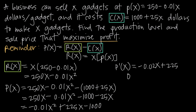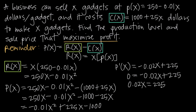The next step is to set the derivative equal to zero to find critical points. Setting negative 0.02x plus 225 = 0 and adding 0.02x to both sides gives 0.02x = 225. Dividing both sides by 0.02 gives x = 11,250. This is a potential critical point — a point at which the function may change direction — and we need the first derivative test to verify it's a local maximum that maximizes profit.